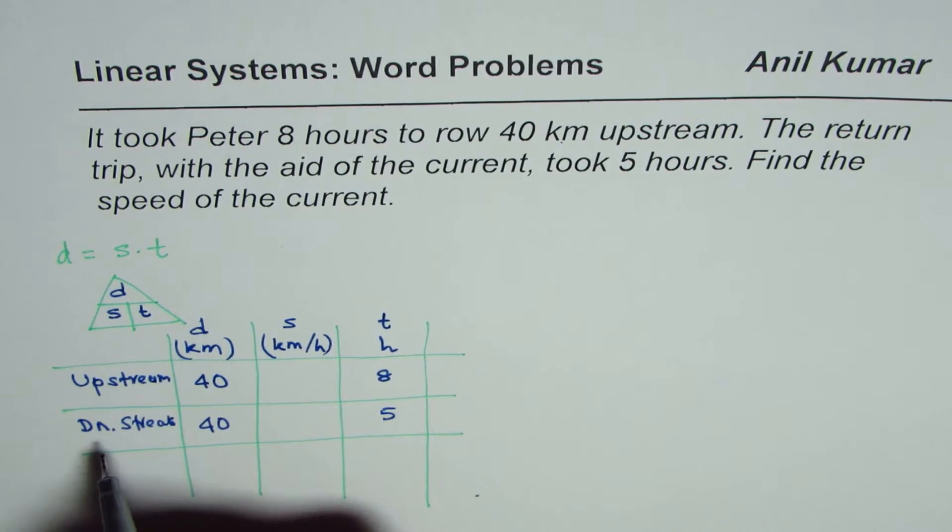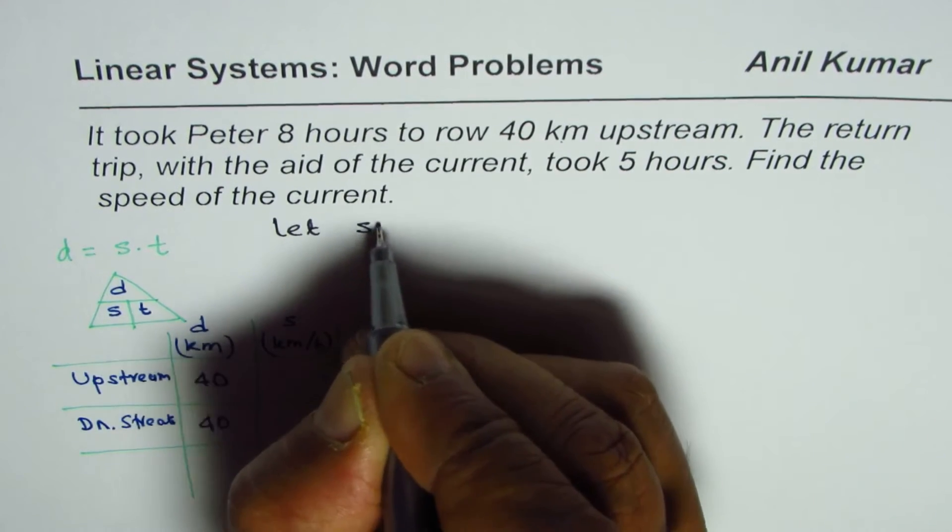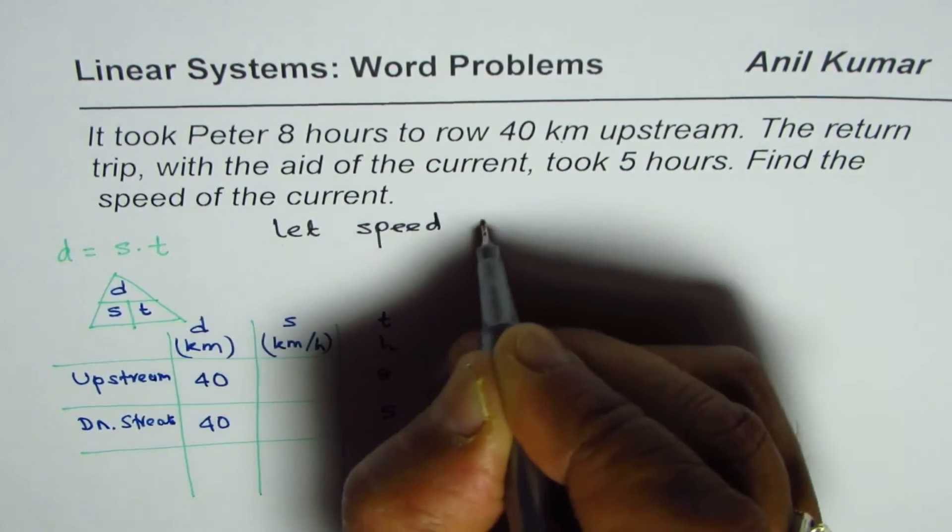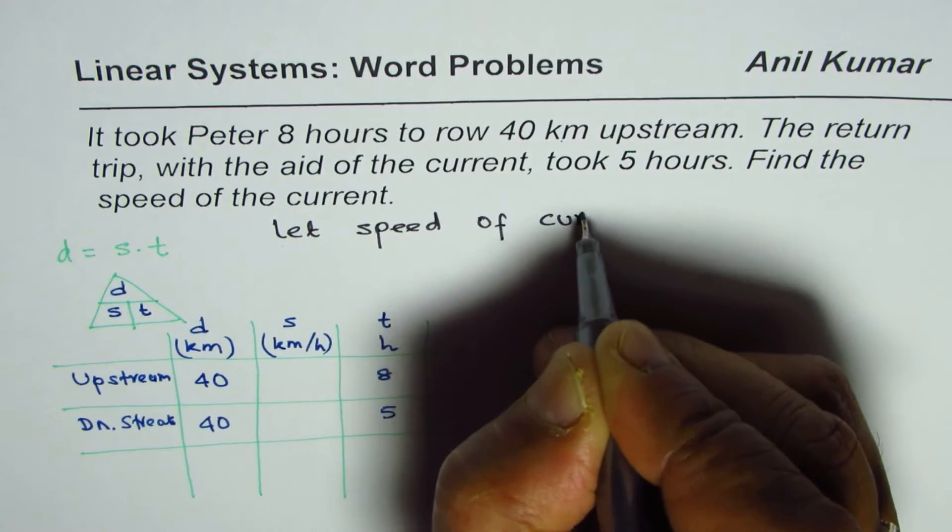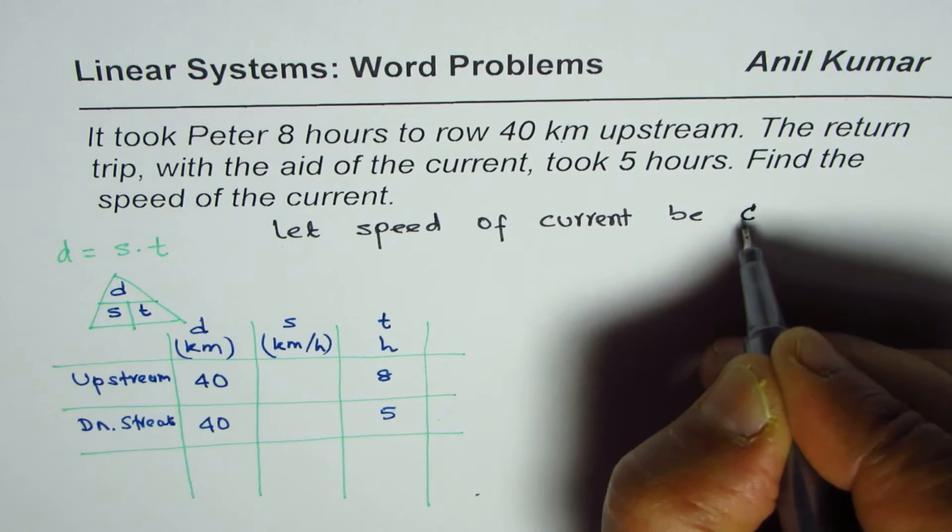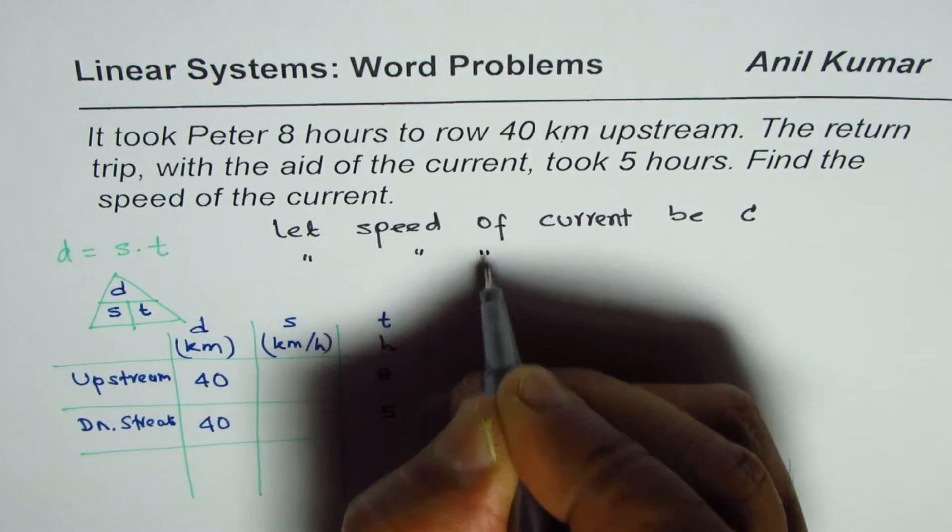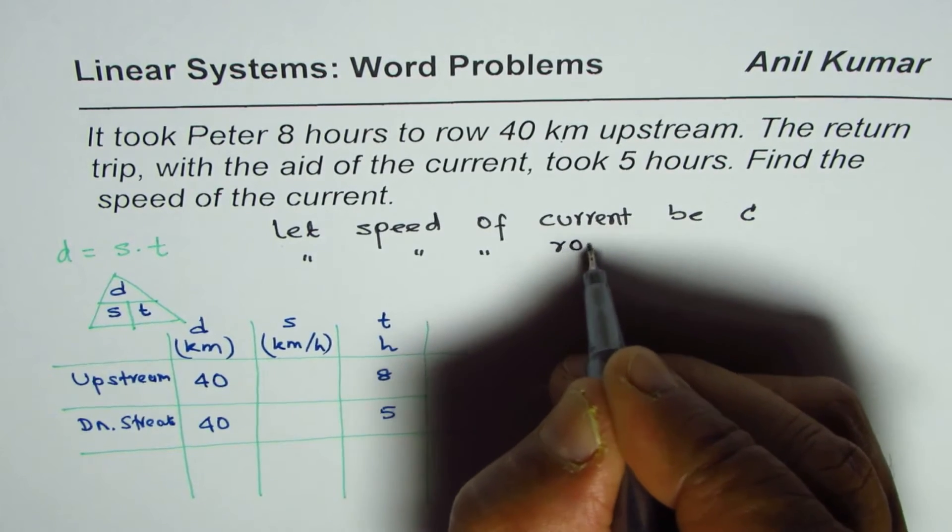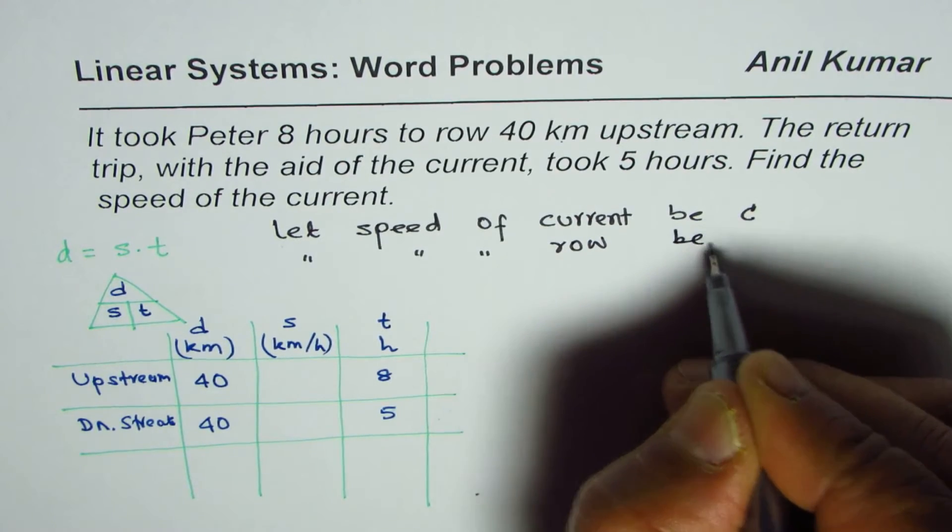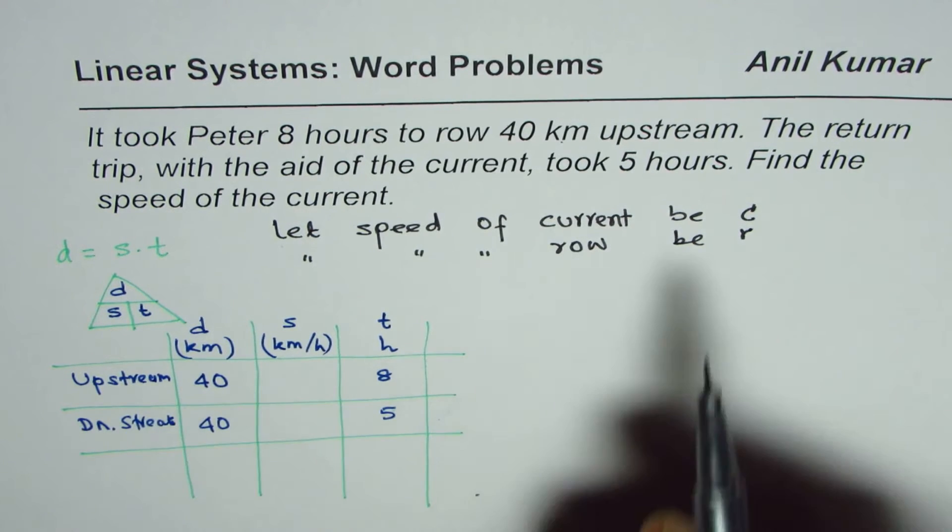Find the speed of the current. So we need to find speed of the current. Let's define a variable - let speed of current be c, and let speed of rowing be r.